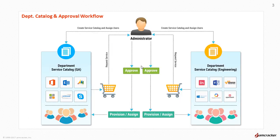Enterprises can build their own cloud services catalogs to leverage the advantages of centralized control, centralized discovery, and centralized access. It is possible to reduce shadow IT with department-specific catalogs pre-configured with cloud apps to ensure that only the corporate-approved cloud resources are used by the employees.